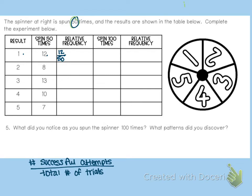Which means if we simplify this, we can divide by 2 to simplify. 12 divided by 2 is 6, and 50 divided by 2 is 25. So that's our relative frequency. Then moving on to the next one, it landed on 2 eight times. So 8 out of 50 attempts. And again, we can simplify this by dividing by 2. 8 divided by 2 is 4, and 50 divided by 2 is 25.